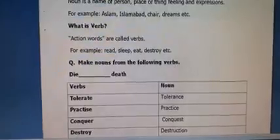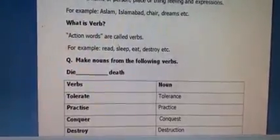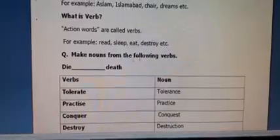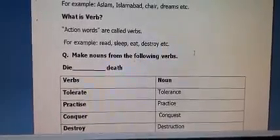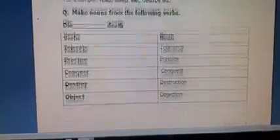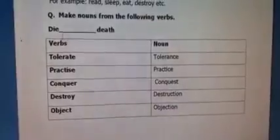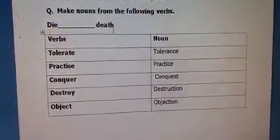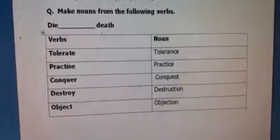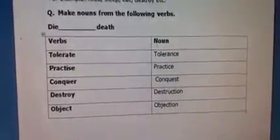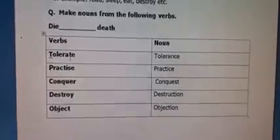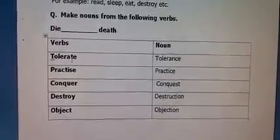In this way we will make nouns from verbs. Our question is: make nouns from the following verbs. We will make nouns in this chapter. The first example is: die — death. Die means marna, and death means maut. In this same way, the next words are also verbs and we will make their nouns.